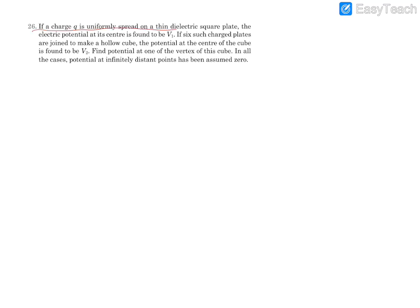This is the next question. Read it carefully. There is a uniformly charged square plate and the potential at its center is given as V1. If we make a cube using six similar plates, the potential at the center is found to be V2. We need to find the potential at the vertex of this cube.